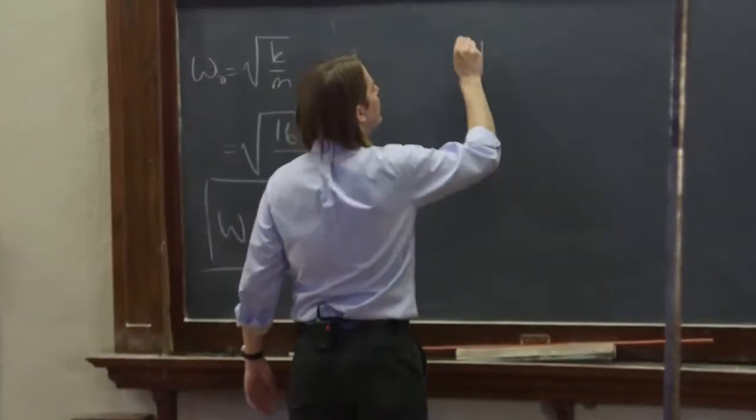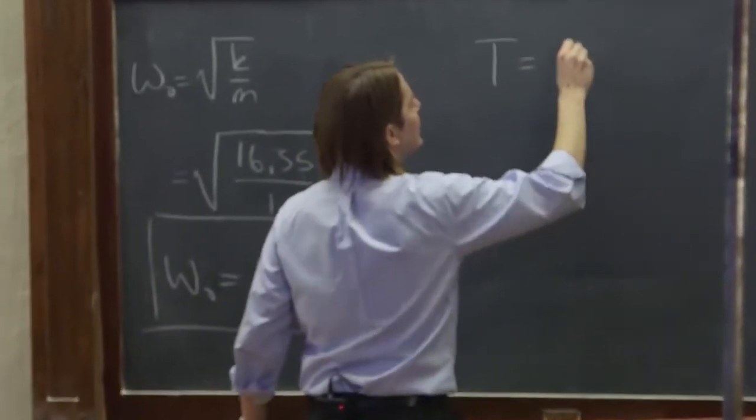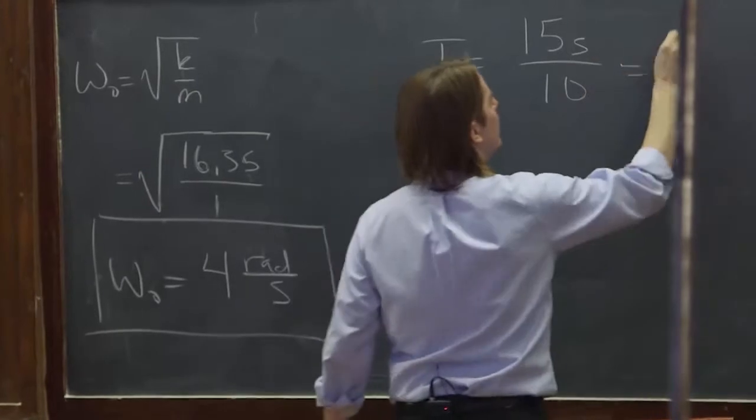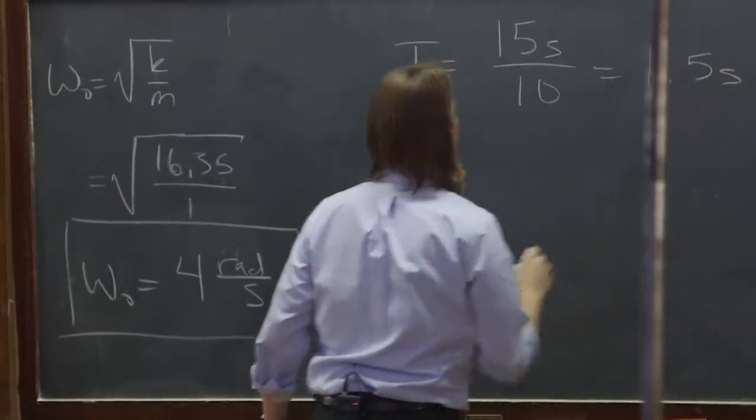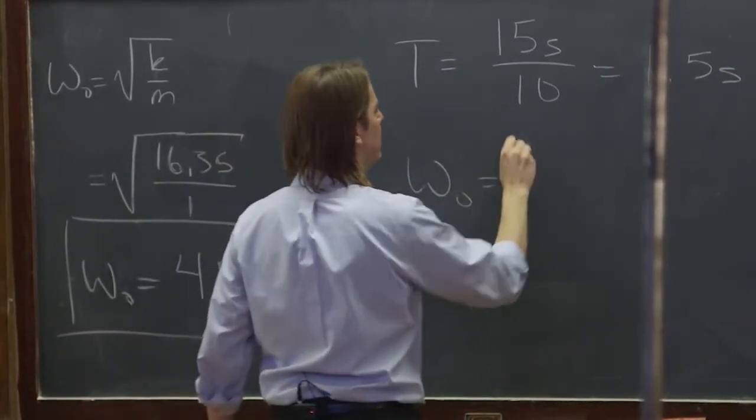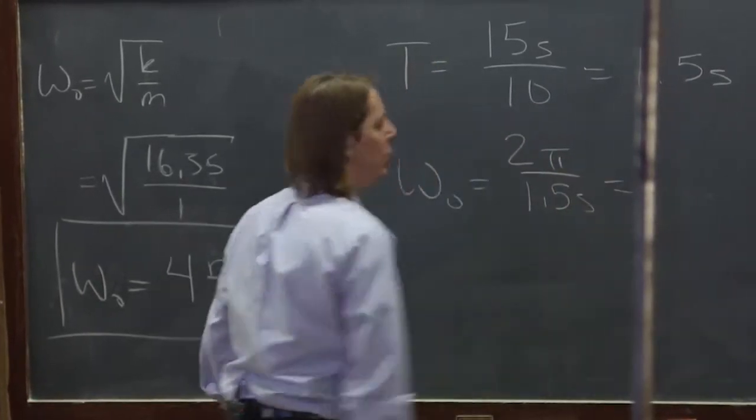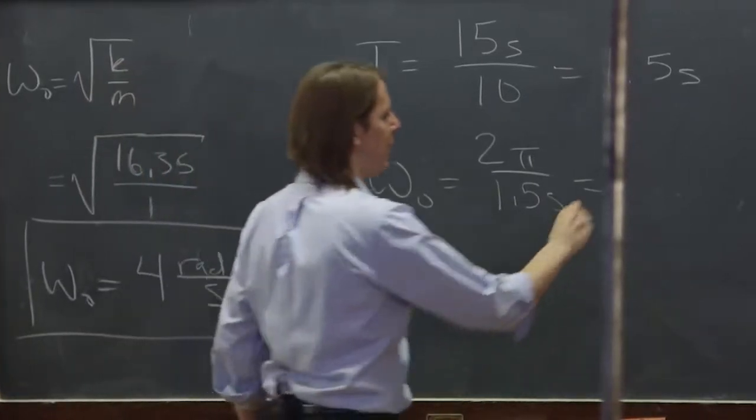So when we measured it, the period was, let's see, it was 15 seconds, but we did it 10 times. So 1.5 seconds. So omega nought measured should be 2 pi over the period, 1.5 seconds, which, if you work it out, is about 4.